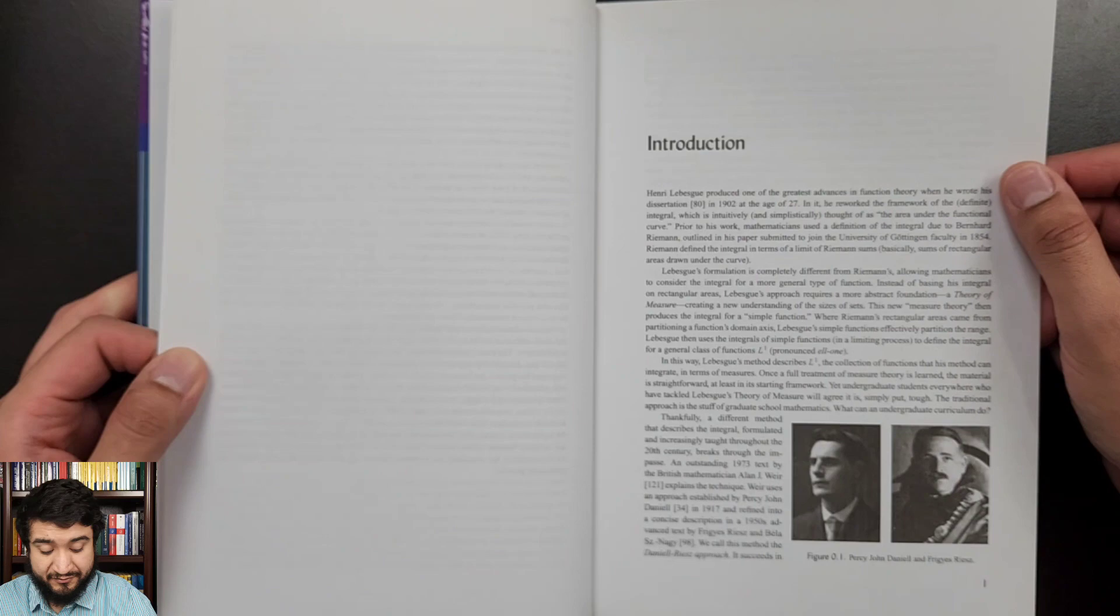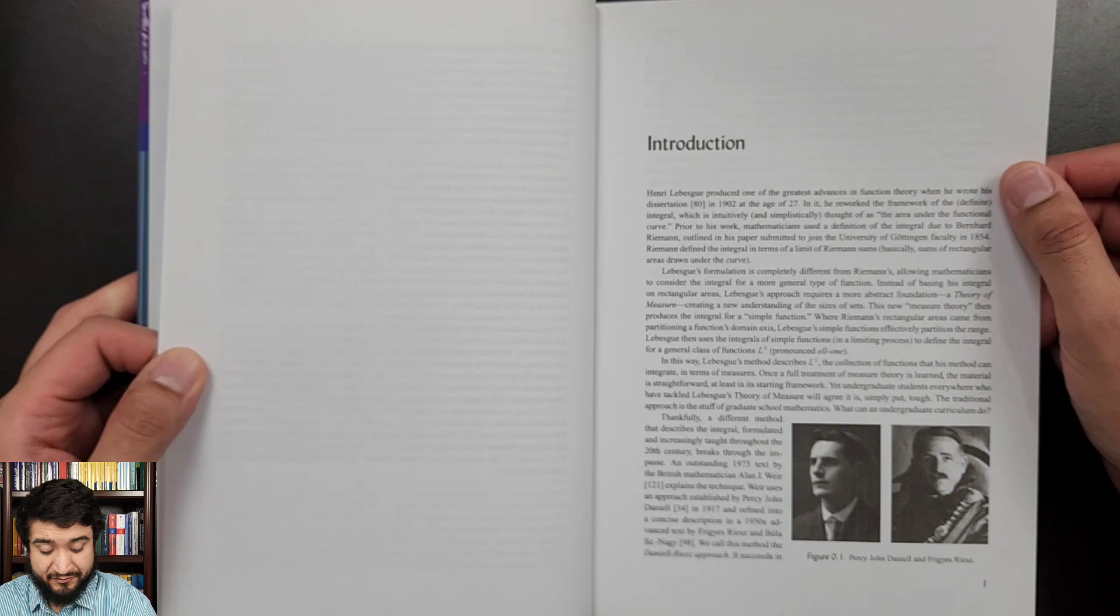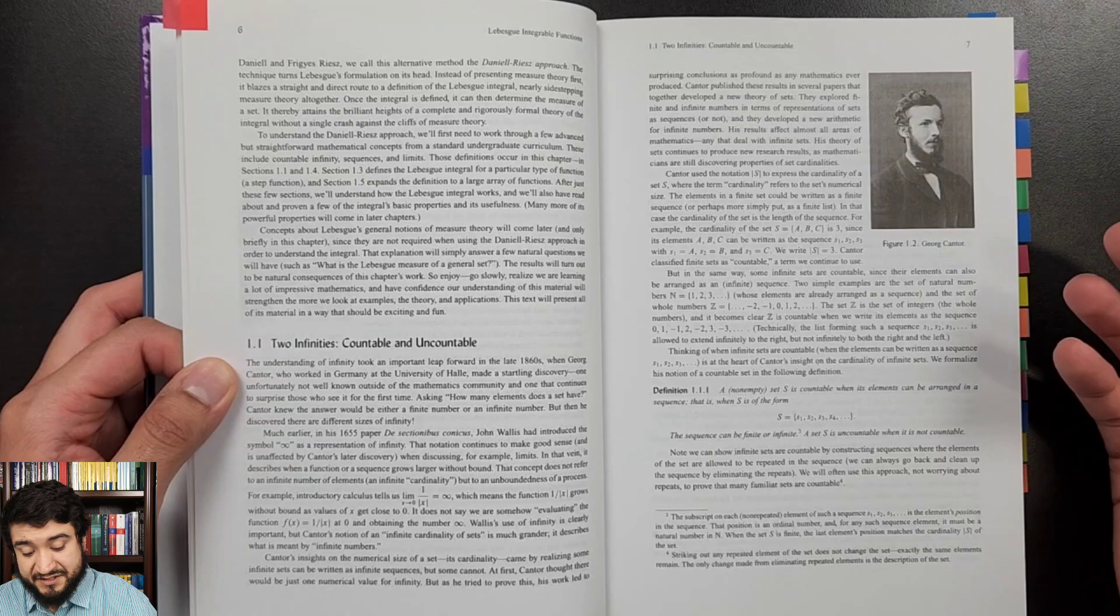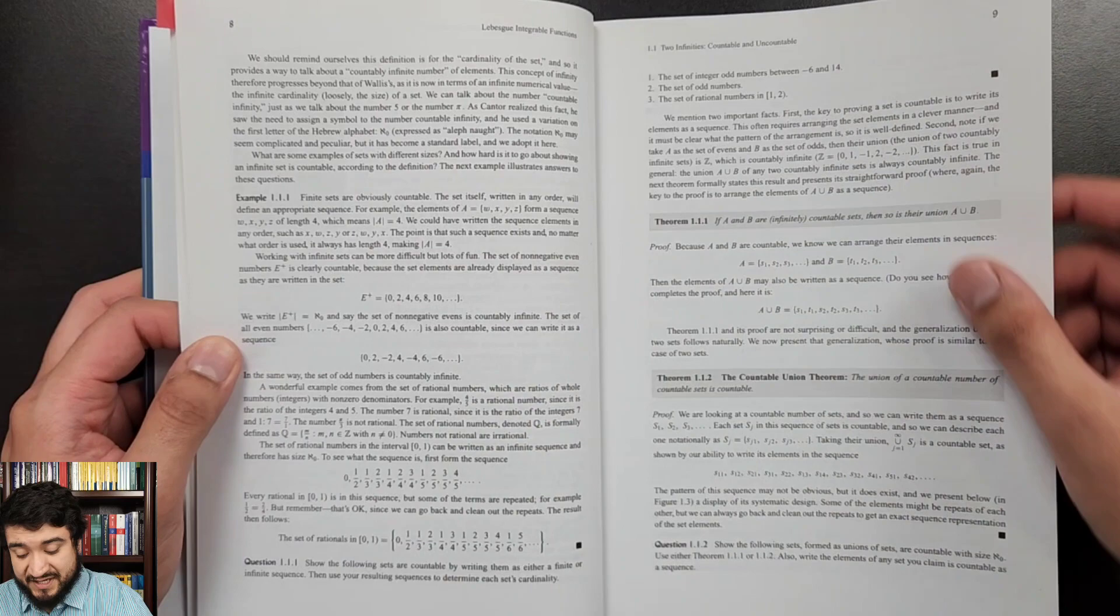Here's the preface if you're interested in reading it. Let's get into this book very quickly. Chapter one really just gets you up to speed, gives you the background that you need to understand the Lebesgue Integral. Section 1.1 here on countable and uncountable sets.